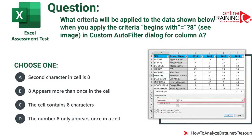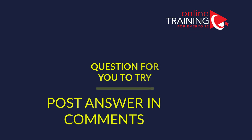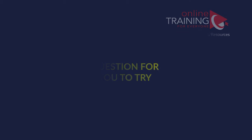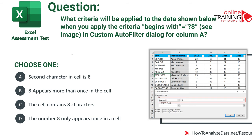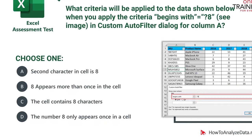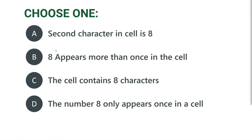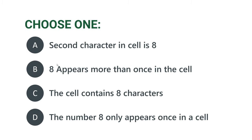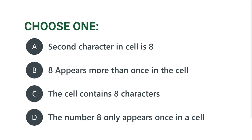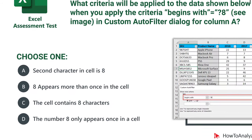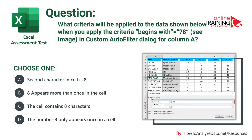What criteria will be applied to the data shown when you apply the criteria 'begins with equal question mark 8' in the custom auto-filter dialog box for column A? You have four choices: second character in the cell is 8; 8 appears more than once in the cell; the cell contains 8 characters; the number 8 only appears once in a cell. Please post your answer in the comments so I can give you the grade.